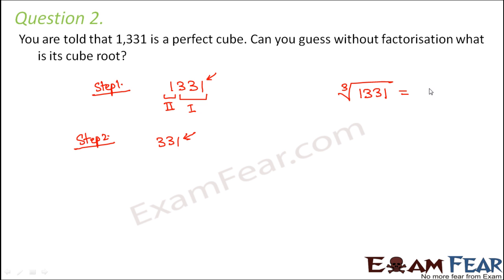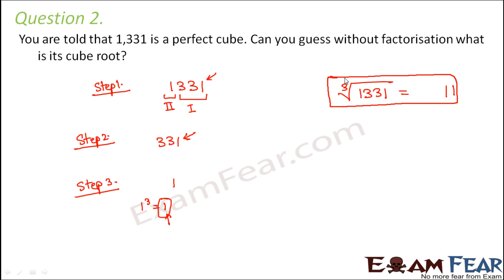Step 3: focus on group 2, which is 1. We need to find a perfect cube less than or equal to 1. We know 1 cubed equals 1, so 1 is that perfect cube. Its cube root is 1, which becomes the tens digit of our answer. Therefore the cube root of 1331 is 11. In this way we can find cube roots using the estimation method.